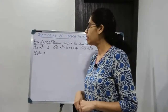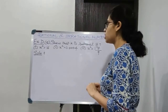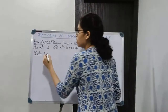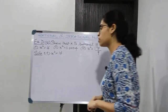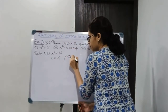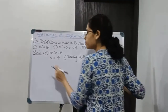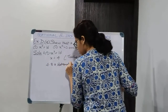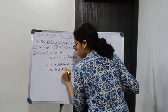Moving on to question number 12: show that x is rational if part 1 x square is equal to 16; part 2 x square is equal to 0.0004; third part x square is equal to 1 and 7 by 9. Starting with the first part: x square is equal to 16, we have to prove that x is rational. Taking square root on both the sides, x is equal to 4. 4 is a rational number and x is equal to 4, therefore x is rational.